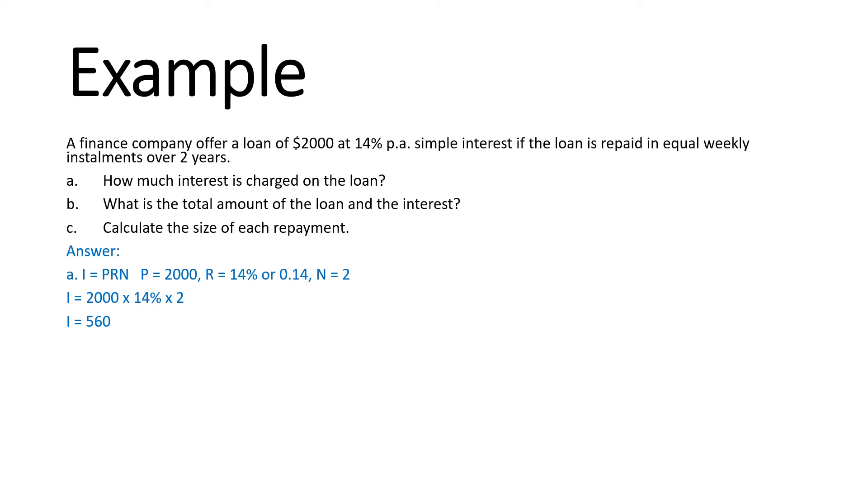Part B. What is the total amount of the loan and the interest? Total amount equals principal plus interest. Our total amount will equal our principal of 2,000 plus our interest of 560. So the total amount will be $2,560.